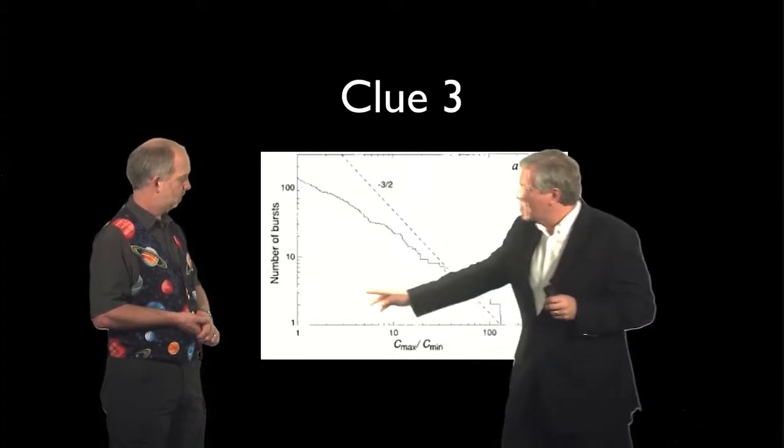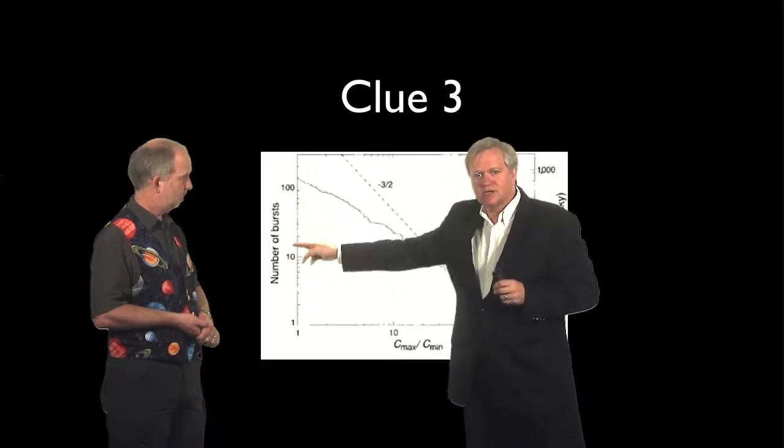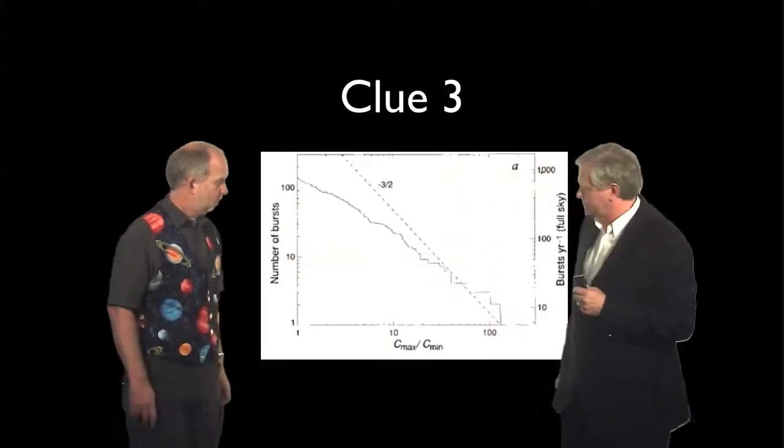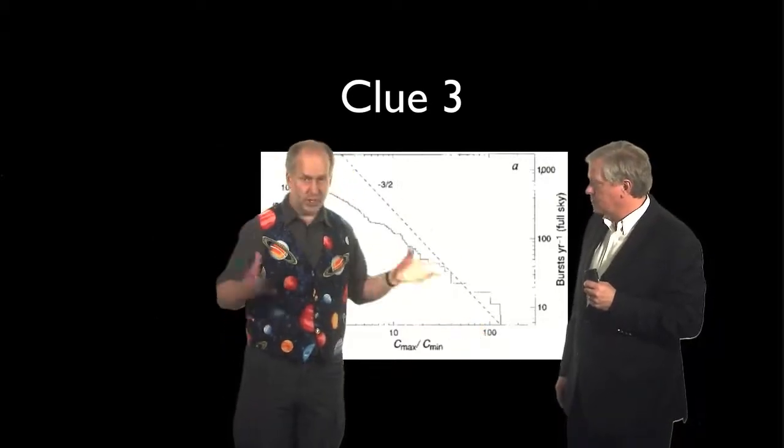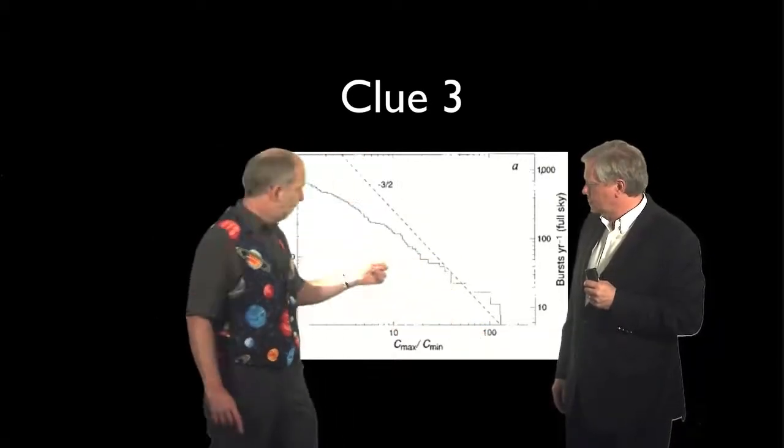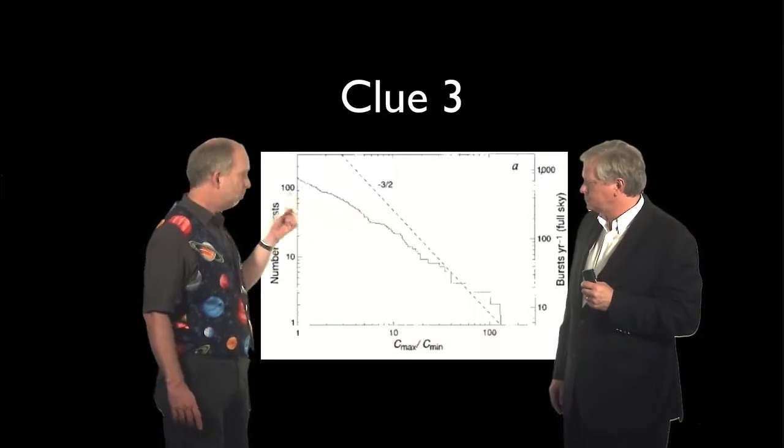And then the number of those bursts that were seen at that brightness level. So these are the number of bright gamma ray bursts. And there aren't very many of the really energetic ones with huge numbers of gamma rays. But as you get fainter and fainter, you see more and more of them.